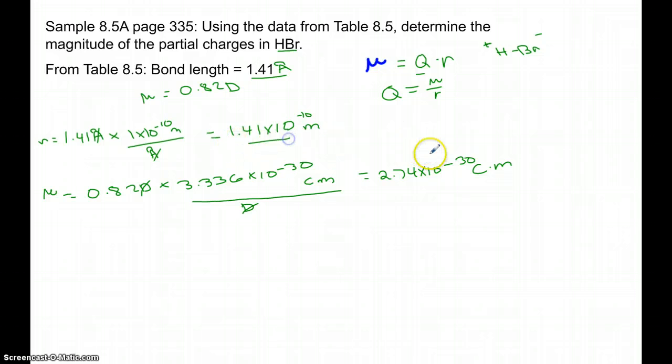So now if I take these two numbers and plug them into my equation, Q equals μ over R, I should get Q equals 1.94 times 10^-20. The meters and the meters here will cancel, so I'll just be left with this unit coulombs. So that is my partial charge.